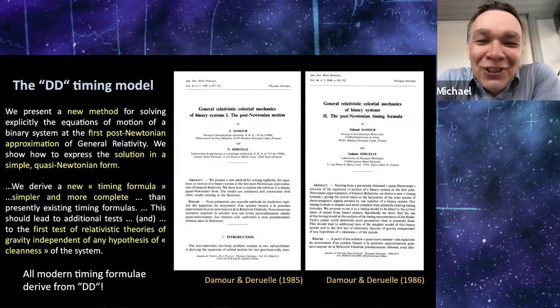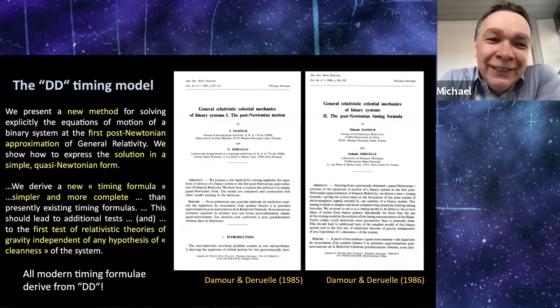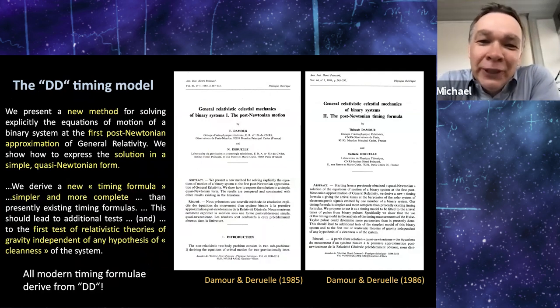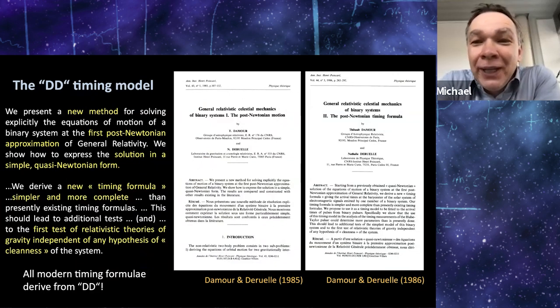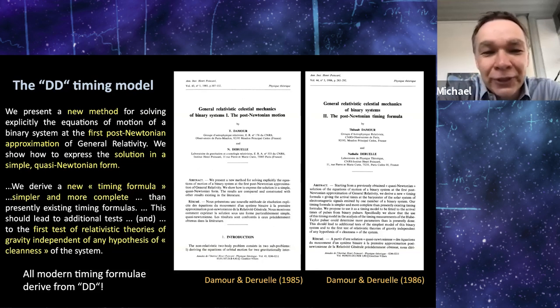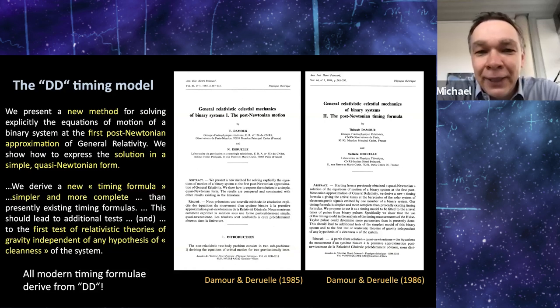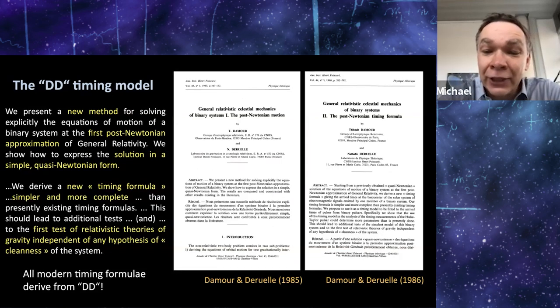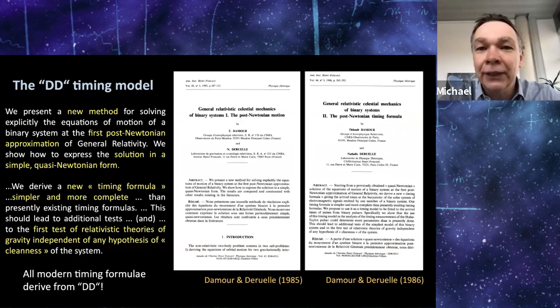But of course, there's also the famous DD timing model, the Damour-Deruelle timing model, which was really a very elegant way of not only solving the equation of motions, but also basically describing a timing formula that we as observers could use and basically use the theory-independent parameters that were introduced for testing our theories of gravity. And all modern timing formulas today actually derive basically from this set of timing equations and model.